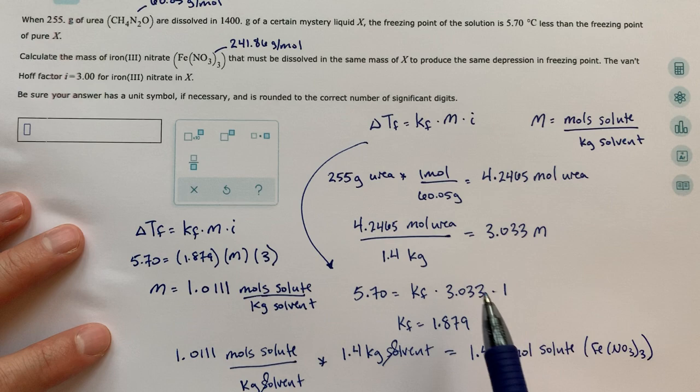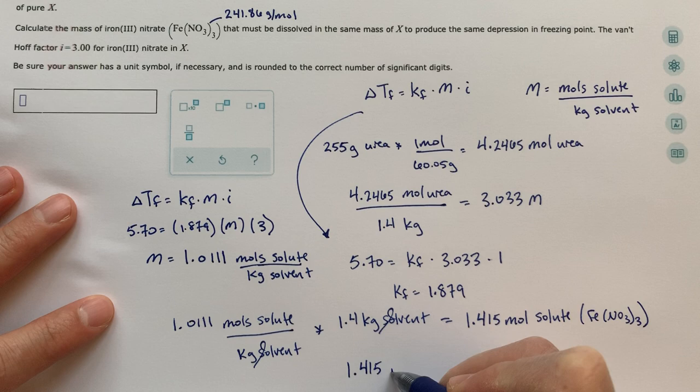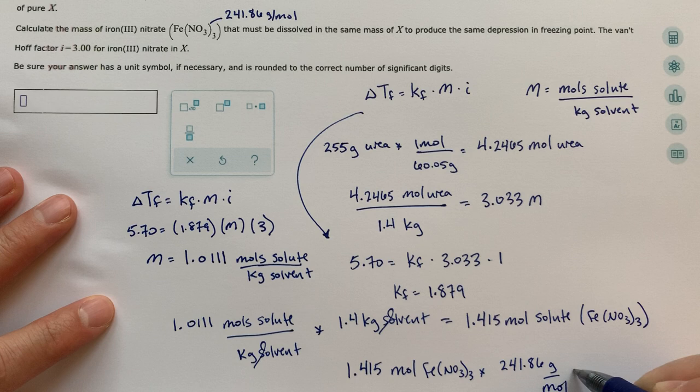What we're asked to find is the mass of iron nitrate. So essentially all we need to do is use this molar mass, do a moles to grams conversion. And we are almost done. 1.45 moles of iron nitrate times 241.86 grams per mole.